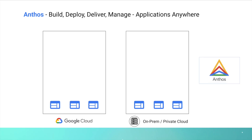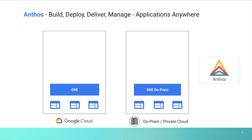Let's look at the Anthos stack and how Google Cloud Anthos helps you build, deploy, deliver, and manage applications across Google Cloud and on-premises or private cloud data centers. You can package applications using containers and manage them using Google Kubernetes Engine to scale, deploy, and launch applications. For applications running on private cloud, Anthos provides Google Kubernetes Engine on-premises to launch, manage, and scale containers just like you do in Google Cloud.